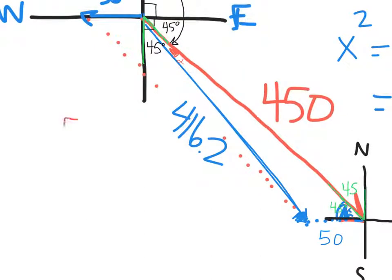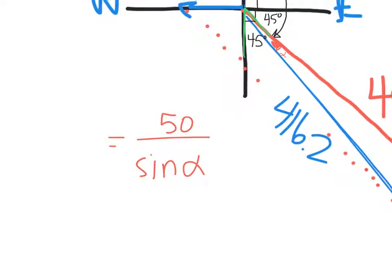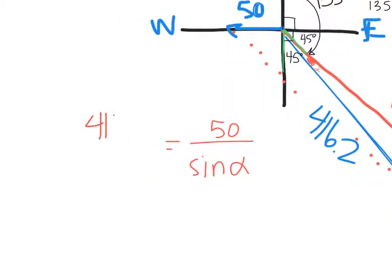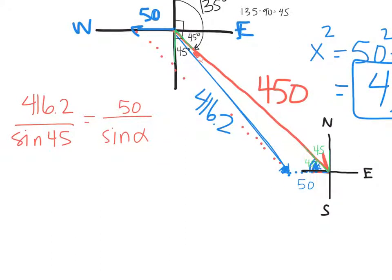Okay so the law of sines says if I take 50 over the sine of the angle across from it and that's why I'm using 50. This angle here is opposite, sorry 50 is opposite this angle so if I set up this proportion 50 over sine of whatever I want here that's going to equal 416 the value that I just found over the sine of the angle across from it. And if we look back here 416 is across from the 45 degree angle.